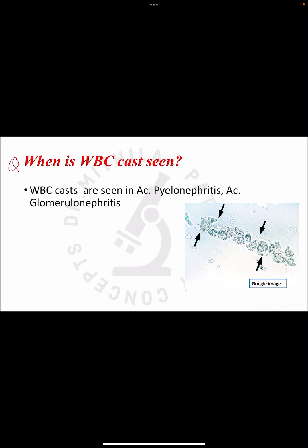The next question is: in which condition are WBC casts seen? WBC casts are seen in acute pyelonephritis and acute glomerulonephritis. In the image shown, you can see the cast structure with WBCs attached to it, noting the granular appearance of the cytoplasm.